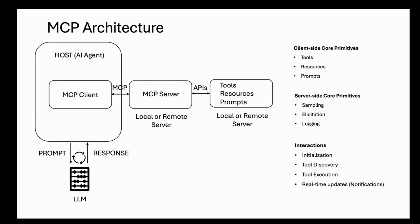Let's now look at the architecture of MCP. The host is the user-facing application. The client is a component within the host that manages connections to servers. The server connects to external tools, events, resources, and prompts. The MCP protocol defines core primitives for the client and server, and also defines the interactions between them. That, in a nutshell, is what MCP is all about.